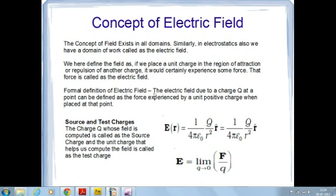If we place a unit charge—a charge with magnitude 1 coulomb—in the region of attraction or repulsion of another charge, it would certainly experience some force according to Coulomb's law. That force which this unit charge experiences is called electric field. How will you formally define it? Electric field due to a charge Q at a point can be defined as the force experienced by a unit positive charge when placed at that point.